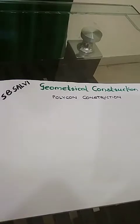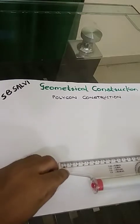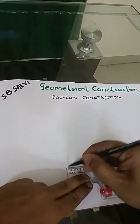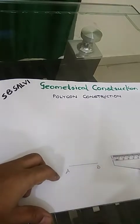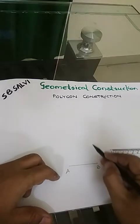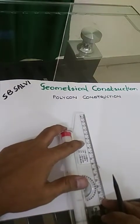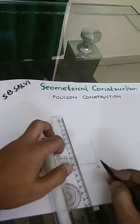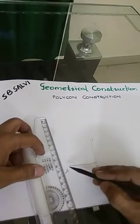In this case, consider a side of the polygon as 50 millimeters. Take that side horizontal, 50 millimeters. I am taking 50 millimeters here, marking two points: point A and point B. From point B, draw a vertical line perpendicular to this of the same length, 50 millimeters. Label this point as C.